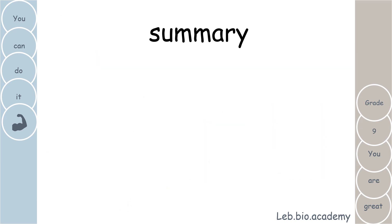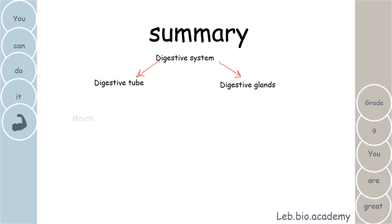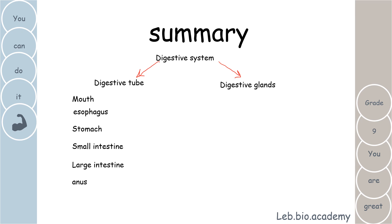As a summary — and this is what you have to write on your notebook — the digestive system in humans is made up of two main parts: the digestive tube and the digestive glands. The organs of the digestive tube are the mouth, esophagus, stomach, small intestine, large intestine, and anus. The digestive glands help in digestion but food does not pass inside them — the glands you are responsible for are the salivary glands, the pancreas, and the liver.